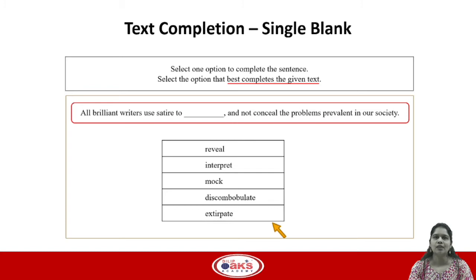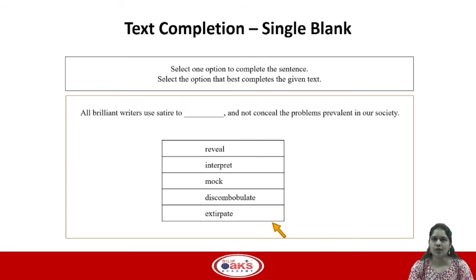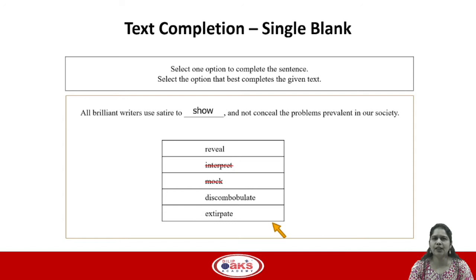The sentence says: all brilliant writers use satire to something and not conceal the problems prevalent in our society. So what do they use satire for? If they are not concealing, they are using it to show the problems prevalent in society — so we want an option that means show. Reveal sounds good, so we keep it. Interpret and mock can be eliminated as they don't match. The last two words are difficult, but reveal matches our anticipated answer, so we can eliminate those and mark reveal as the correct answer choice.